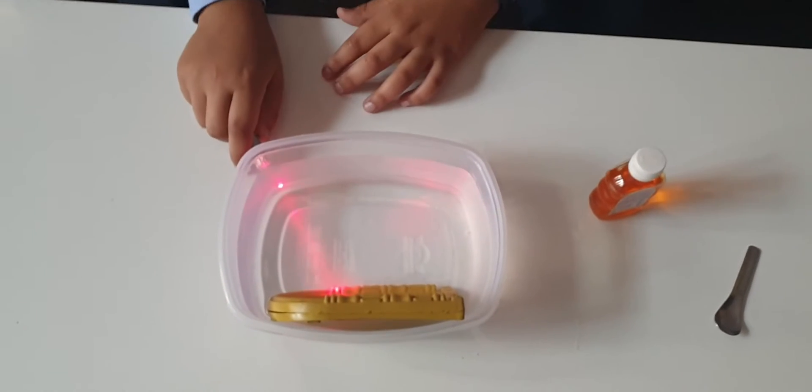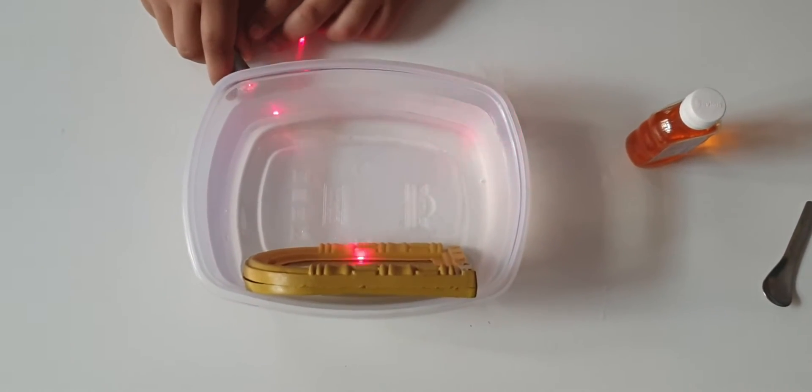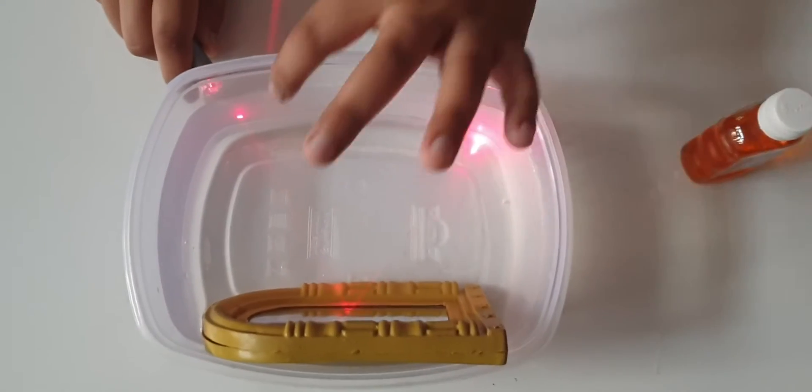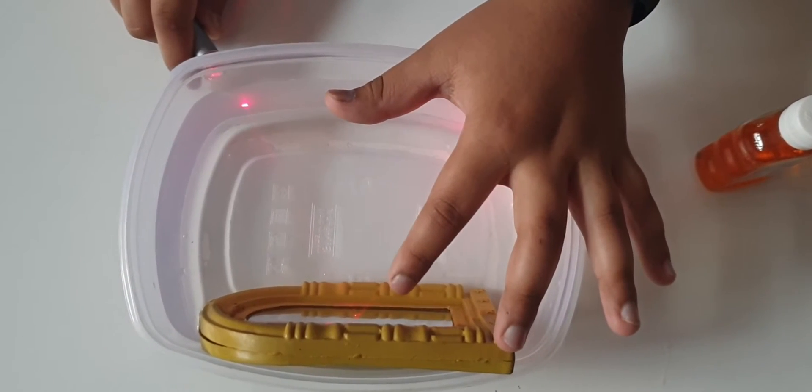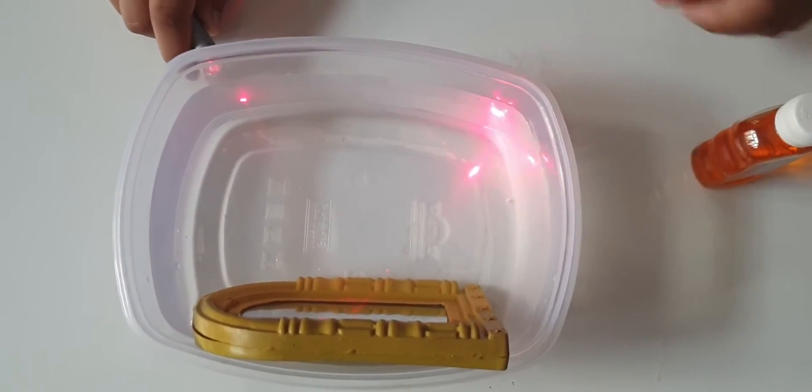You can see the path of the light. This light going here is called the incident ray, and this light reflected from the mirror is called the reflected ray.